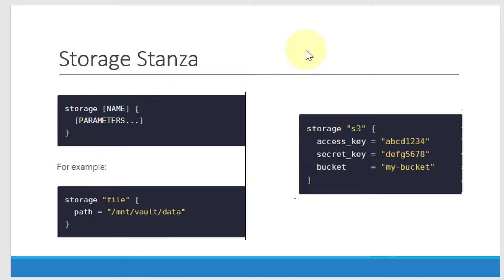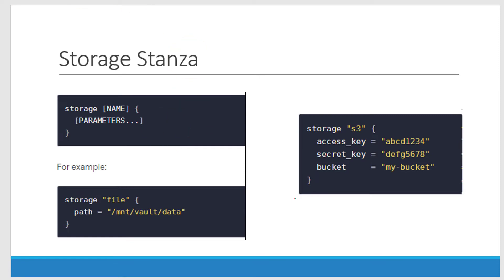To get started, I am going to use file type storage, where I will provide a folder location that will be used to store the data. Till now we were using developer mode for HashiCorp Vault, so whenever I restart the server, the secrets we were adding into the vault were getting erased. Once we add storage, all the data will get stored there. That raises the question of how to keep that storage safe so that no one else can access and retrieve the secrets. We will configure storage, start the server in production mode (not developer mode), and learn how to initialize the vault, unseal the vault, and more.